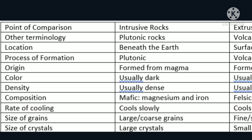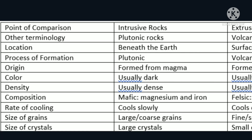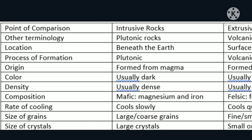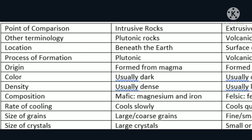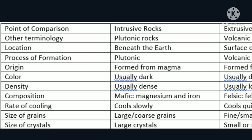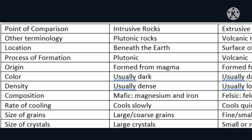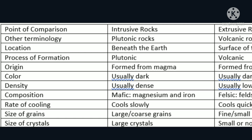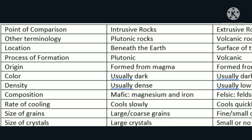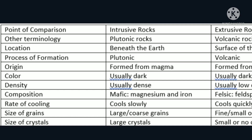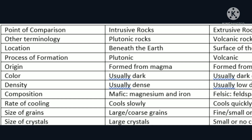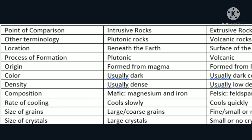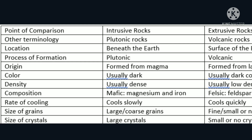Para sa other terminology, ang other terminology for intrusive rocks ay plutonic, ang sa extrusive naman ay volcanic. Para sa location, ang mga intrusive rocks ay matatagpuan beneath the earth, while extrusive rocks are found on the surface of the earth. Sa process of formation, ang intrusive ay plutonic, ang extrusive naman ay volcanic. Para sa origin, ang intrusive rocks ay form mula sa magma, while extrusive rocks are formed from lava.